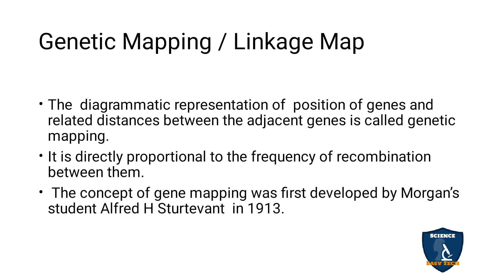Next, we move on to genetic mapping, also called linkage map or gene mapping. The diagrammatic representation of the position of genes and the relative distance between adjacent genes on a chromosome is called genetic mapping. This genetic map distance is directly proportional to the recombination frequency — so 50% recombination frequency means a genetic mapping distance of 50 units.